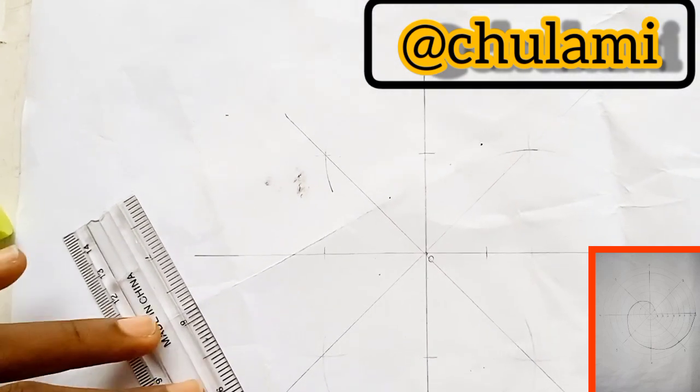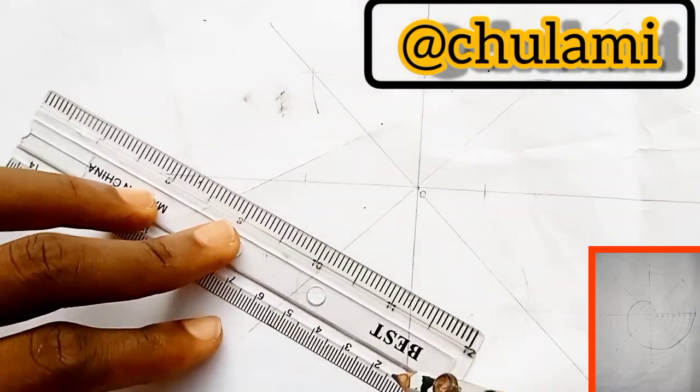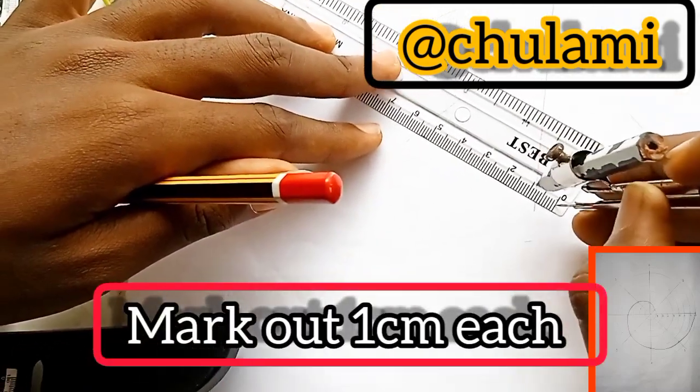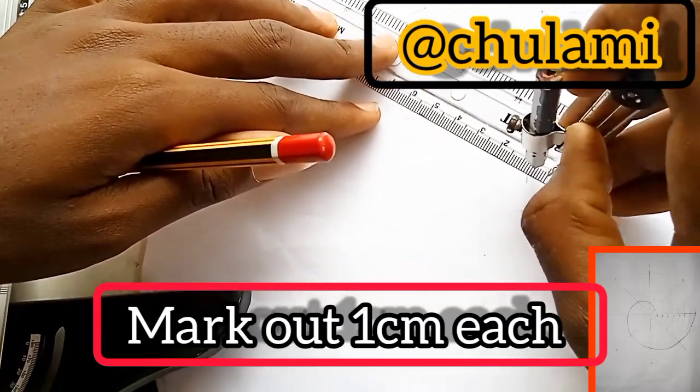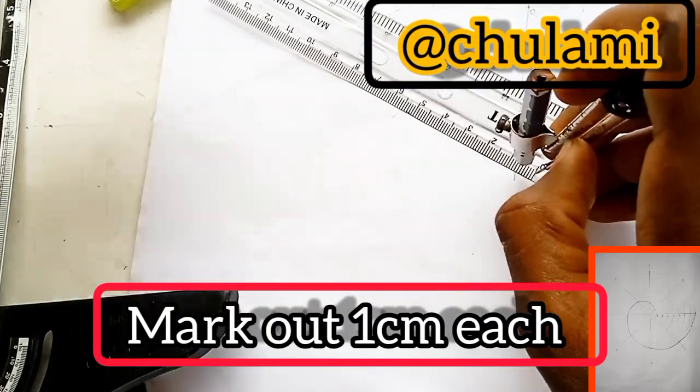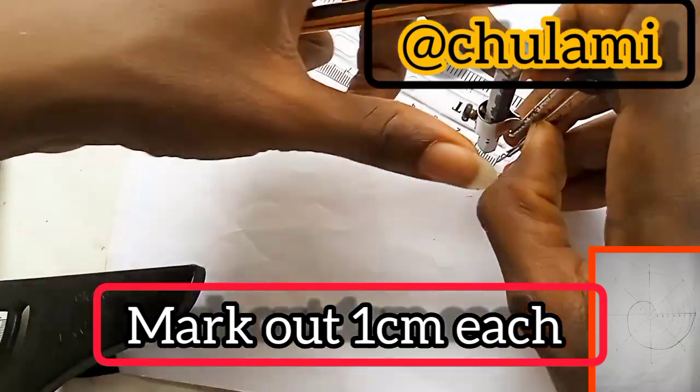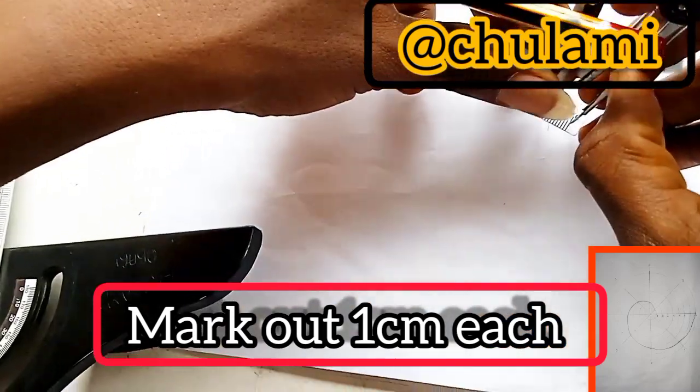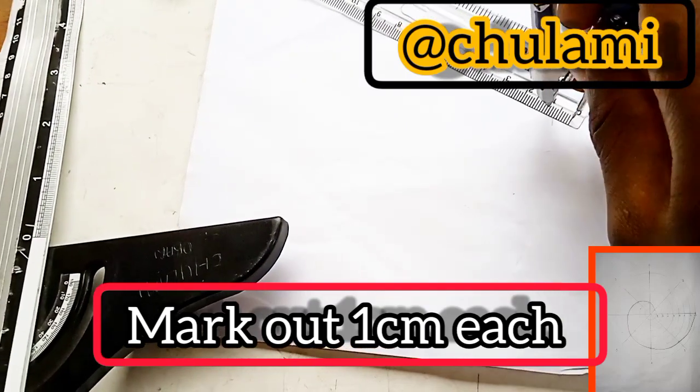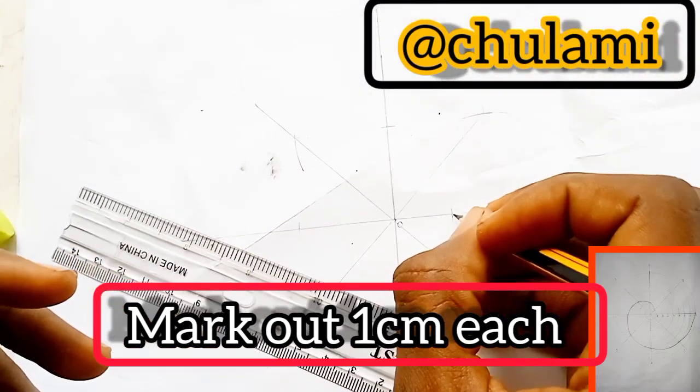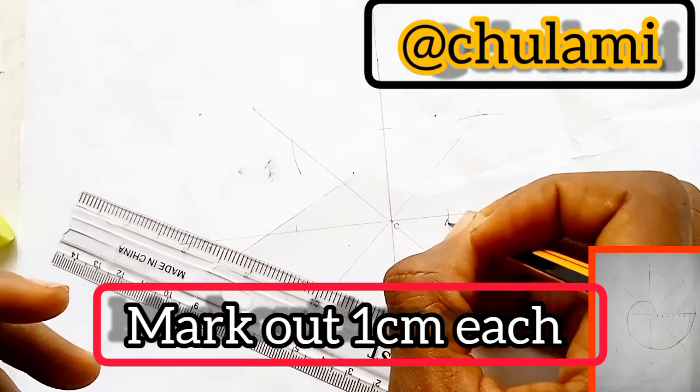Now after marking out that 2cm, we come back to our main ruler. And we take, let's say 0.5cm. You can actually take 1 or 0.5. But let's take 1, so I have a diagram kind of more bigger. So you put that at this point. This first point that we marked, we call it our point A.